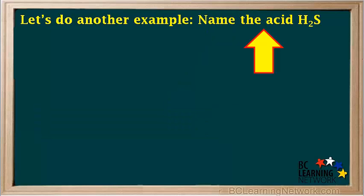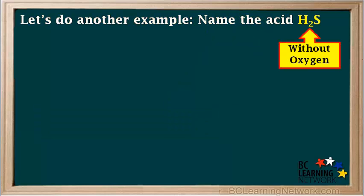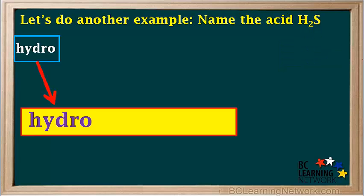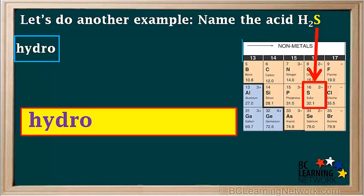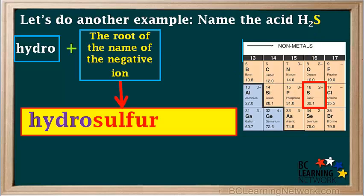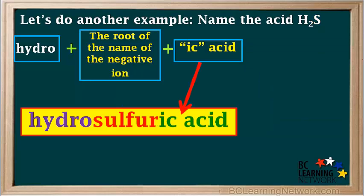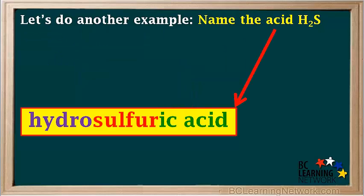Let's do another example: name the acid H₂S. H₂S does not contain oxygen, so we use the system for naming acids without oxygen. We start with the prefix hydro. The negative ion is the ion of the non-metal sulfur. For the root of the name of sulfur, chemists have chosen to use the whole word sulfur. We finish the acid name by adding -ic acid. So the name of the acid H₂S is hydrosulfuric acid.